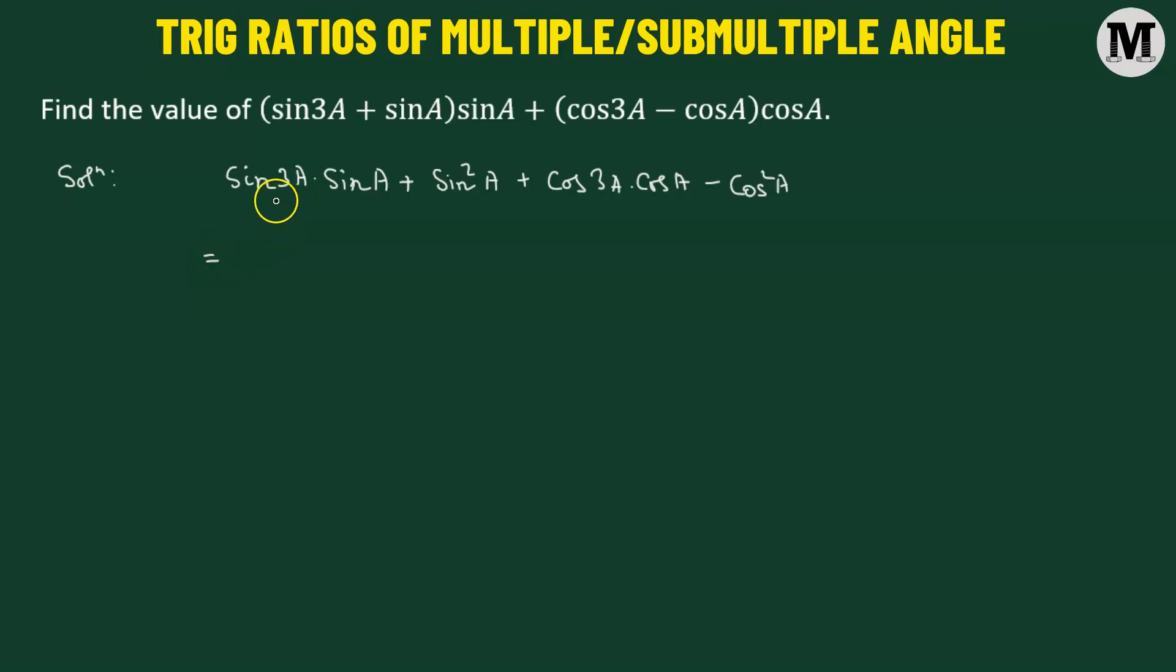We're going to combine the first term and the third term. So let's write it as cosine of 3A times cosine of angle A, add it to sine of angle 3A times sine of angle A. Then we're going to combine the second and the third term, but we're going to take negative as a common factor. So we have negative times cosine squared A minus sine squared A.